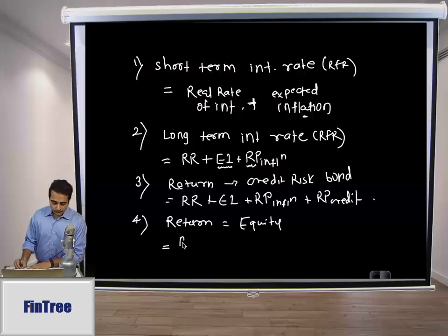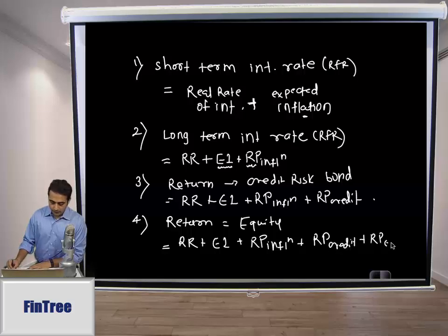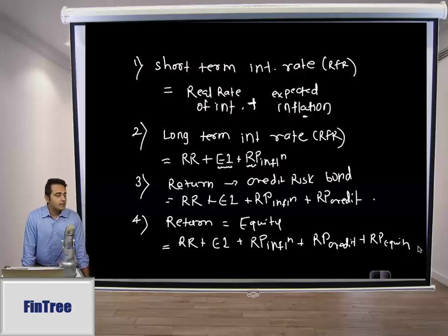Now the equation becomes real rate of return plus expected inflation plus risk premium on inflation, plus risk premium for credit, and plus additional risk premium for equity. Compared to a credit bond you would expect to earn more. This risk premium of equity is an incremental return over and above credit.